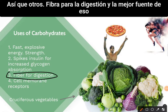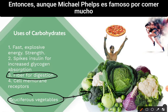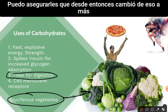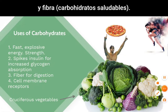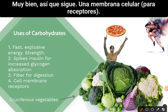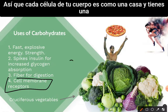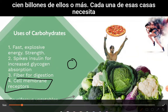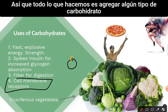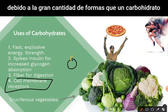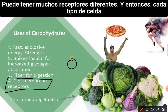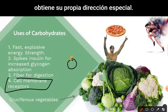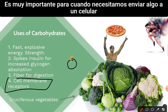Fiber aids digestion, and the best source is cruciferous vegetables. Even though Michael Phelps was famous for eating a lot of pizza, he has since switched to cruciferous vegetables — great sources of carbohydrates and fiber. Carbohydrates also serve as cell membrane receptors. Every cell in your body is like a house, and you have 100 trillion of them. Each needs an address, so carbohydrates are stuck out on the surface. Because of the vast number of shapes a carbohydrate can take, each cell type gets its own special address.